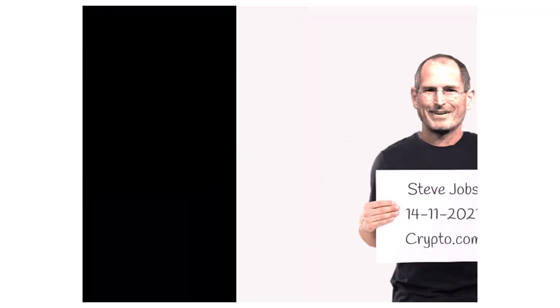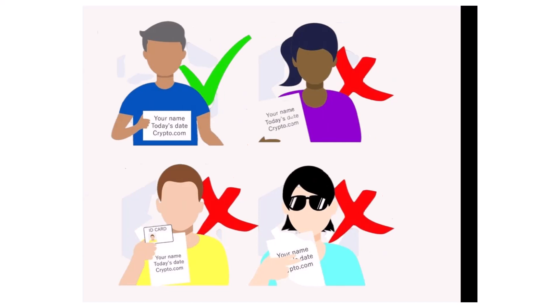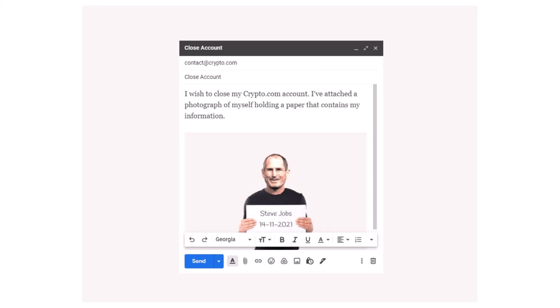After writing your name, date, and crypto.com on the piece of paper, you must take a photo of yourself holding it. This is an essential step to remove your account. You can also ask a friend to take the photograph. Do not worry about privacy — this photo will be used solely to verify your identity. The piece of paper must be visibly held, and your face, upper chest, and entire arm should also be visible in the photograph.